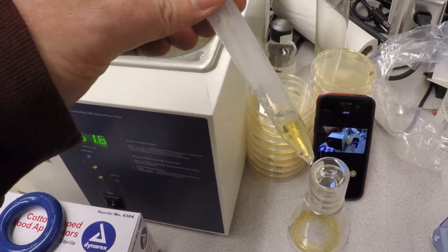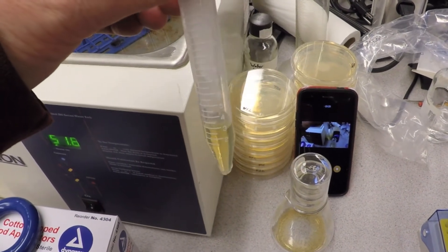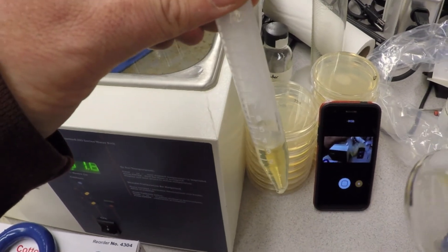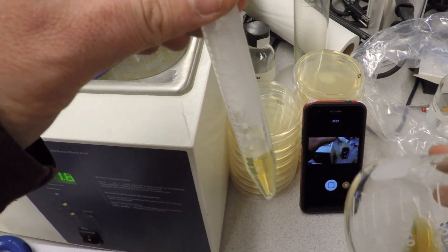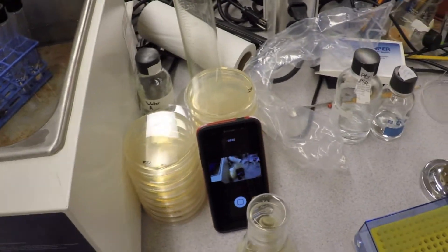This is three mils, 3.0 mils of CTT slop agar. And what you're going to do is take your pelleted, re-suspended in 100 microliter cells, and you're going to put them in here.